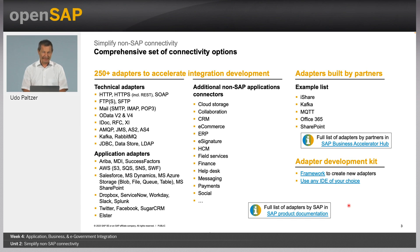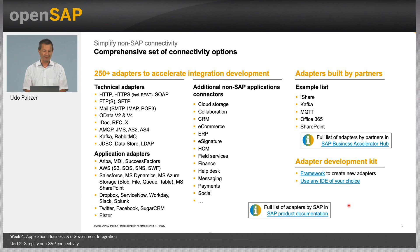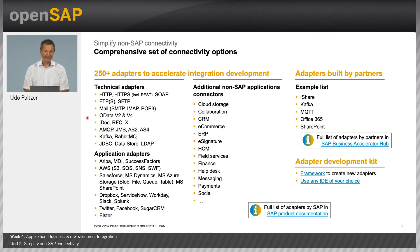On this slide you can see the long list of adapters that we provide out of the box with SAP Integration Suite — more than 250 adapters. These include technical adapters like HTTP, HTTPS, FTP, FTPS, MAIL, OData version 2 and version 4, AMQP, AS2, AS4, Kafka, and RabbitMQ adapter.